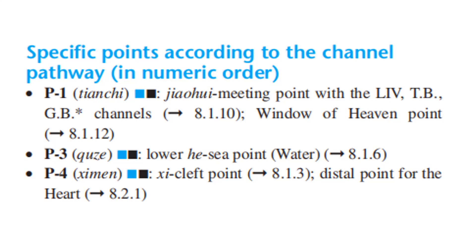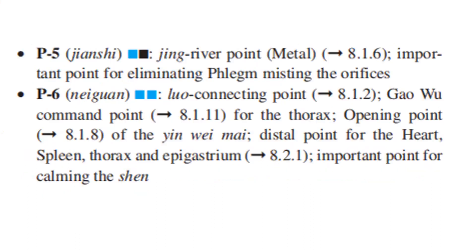Specific points according to the channel pathway in numerical order. P1 is the Jiao Wei meeting point with the Liver, Triple Burner, and Gallbladder channels, and the Window of Heaven point. P3 is the lower He-sea Point, Water point. P7 is the Xi Cleft Point and the distal point for the heart. P5 is the Jing River Point, Metal point, and important point for eliminating phlegm and opening the orifices.